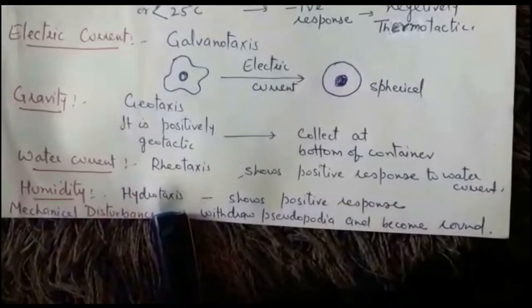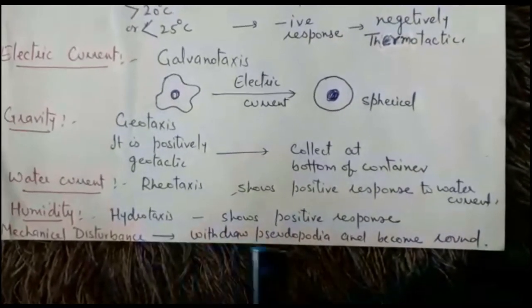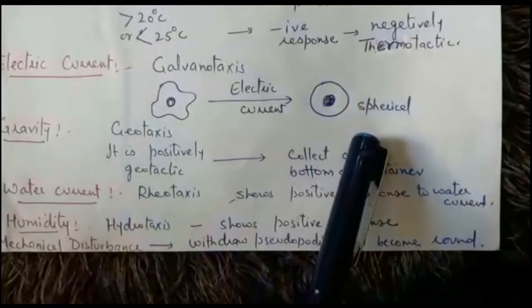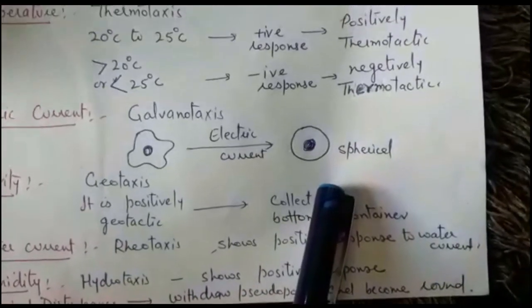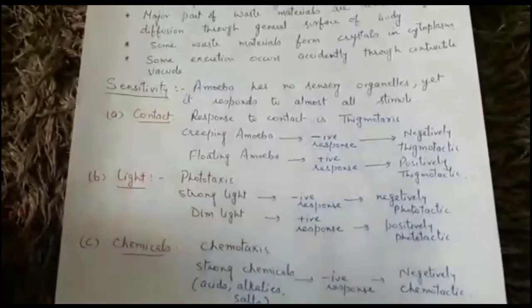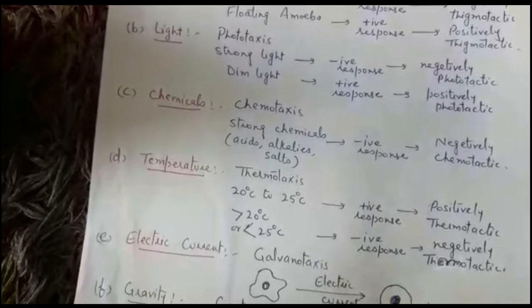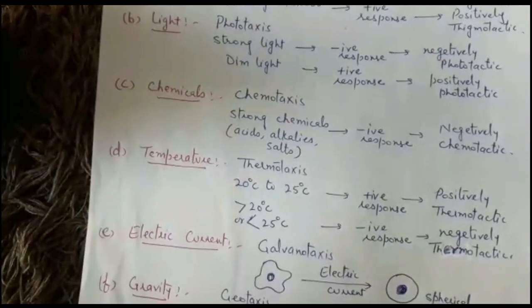Regarding mechanical disturbance — if we place amoeba in a vial and try to shake or disturb it, it will withdraw its pseudopodia and assume a spherical shape. This covers excretion in amoeba and how amoeba responds to different types of stimuli. Since there are no sensory organelles, the responses are simply due to the irritability of the cytoplasm. We will clear your doubts in Google Meet.